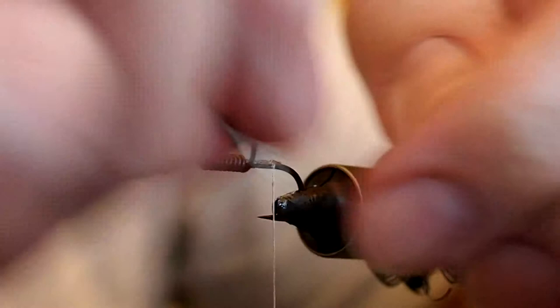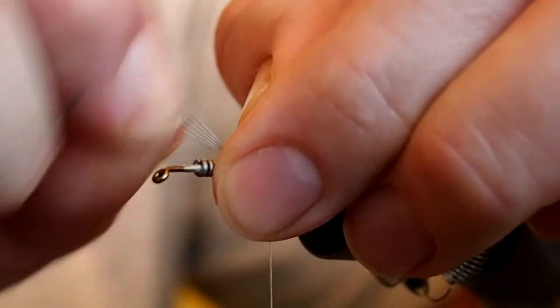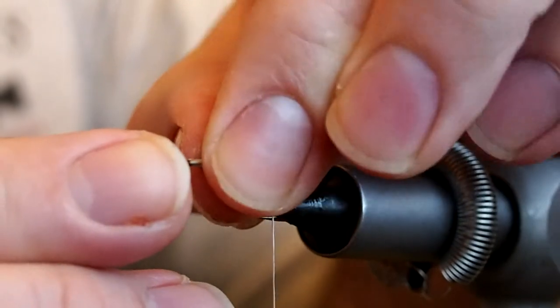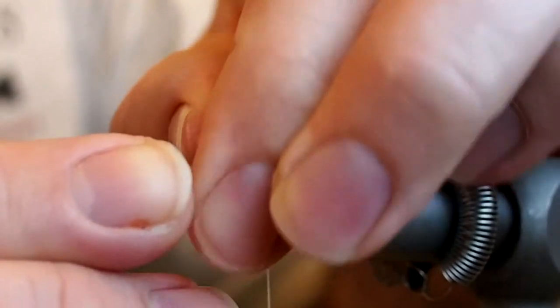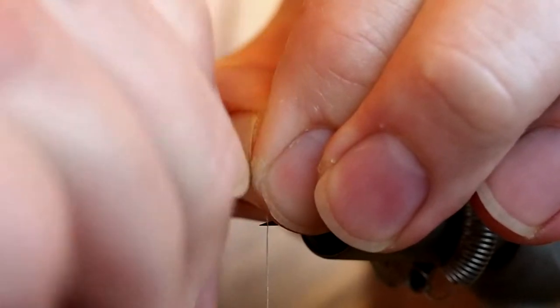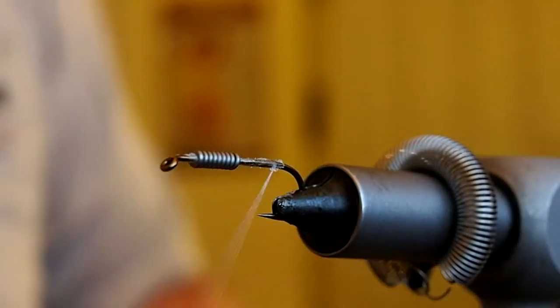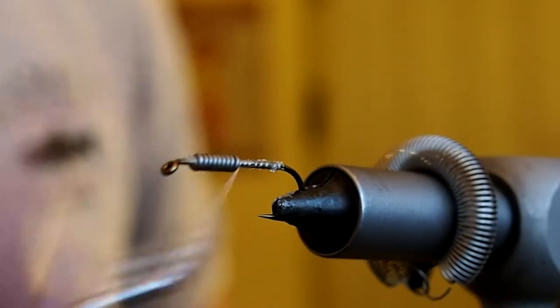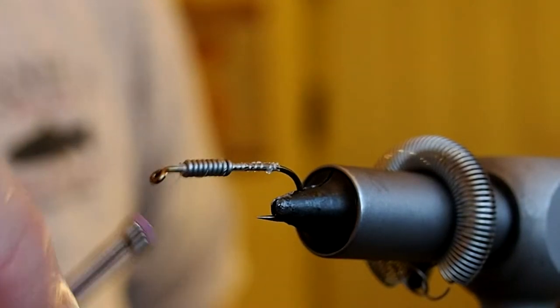I've got mine. I'm just going to slide that lead forward towards the eye. I want that to be about the hook eye's length behind the eye. I'm going to bring my thread back forward and begin to capture the lead.